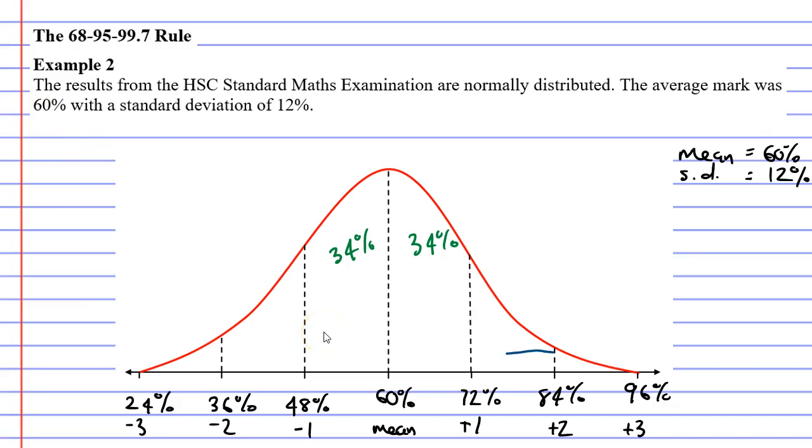Next, we know that 95% of the data lies within two standard deviations of the mean. This 95% area can be broken into four sections. We already know what two of these sections are. We know that two of them are already 34%. So we're going to take our 95% and subtract 34% twice, which is the same as just subtracting 68%. When we do that, what are we going to get?